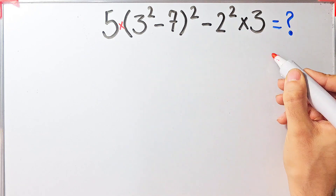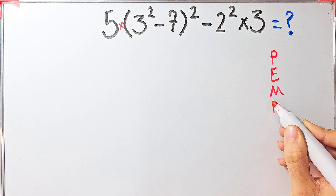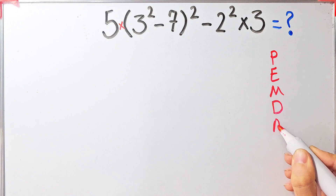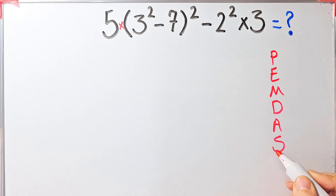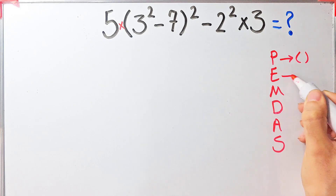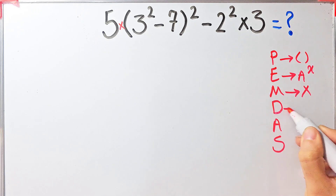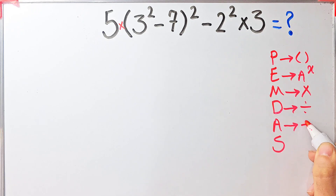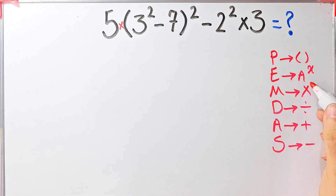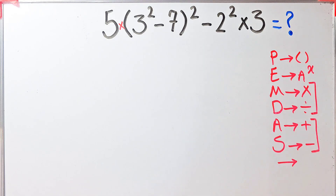To solve this question we need to follow the order of operations, which is PEMDAS. PEMDAS shows the priority of the mathematical operations, and if you don't pay attention to this rule you get the wrong answer. P stands for parentheses, E stands for exponent, M stands for multiplication, D stands for division, A stands for addition, and S stands for subtraction. Multiplication and division have the same level of priority; addition and subtraction also have the same level of priority, and when we have both in an expression we start from the left.